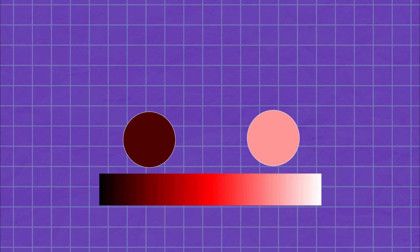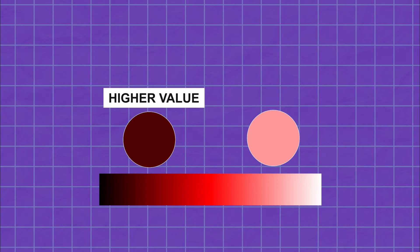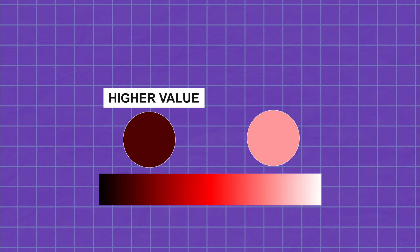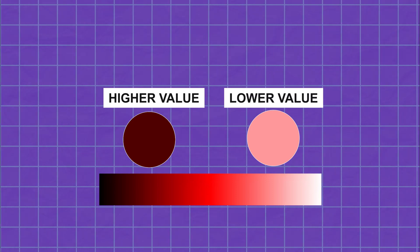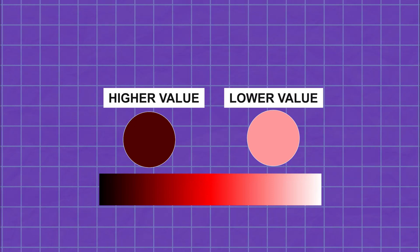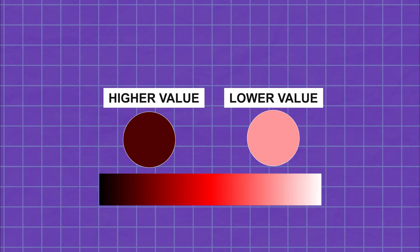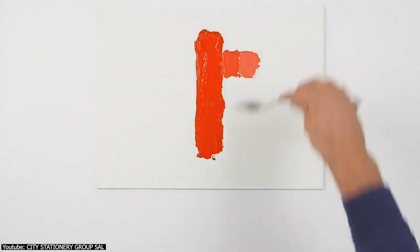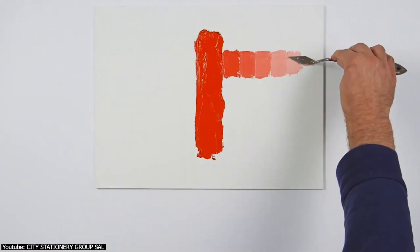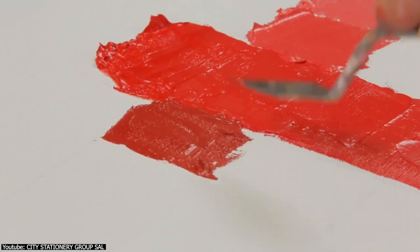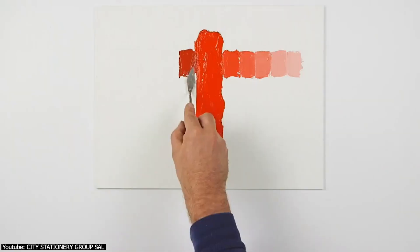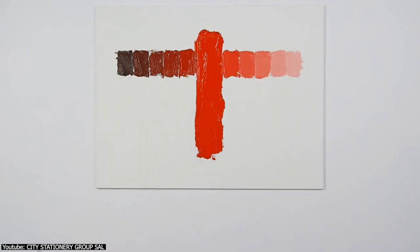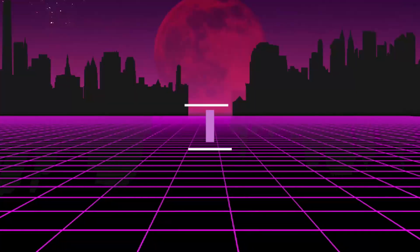In the same example, maroon is what we call a higher value since it's darker, whereas pink is a lower value since it's mixed with white and therefore lighter. Easy as pie! You can experiment by creating multiple values out of a single or multiple colors, just by adding different amounts of black, white, or both to the hue of your choice. Now that we have it, how do we actually use it?